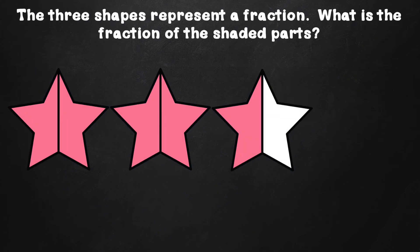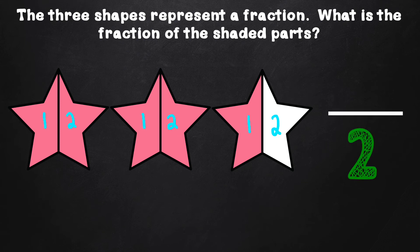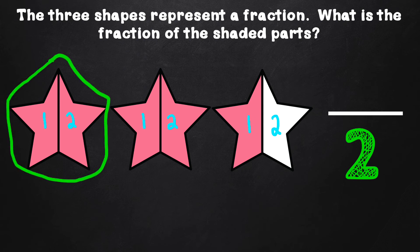Now let's look at this example. The three shapes represent a fraction. What is the fraction of the shaded parts? To figure out the fraction, we would first need to determine the denominator. To figure out the denominator, we need to count how many parts the stars are partitioned or divided into: one, two. Since each star has two pieces, the number two goes in the denominator. Remember that to name the fraction of objects beyond or more than one whole, we look at how many parts one shape or object is partitioned into. That number goes in the denominator.